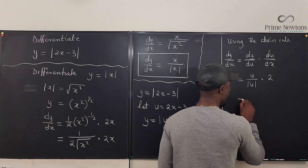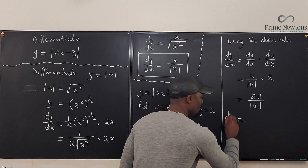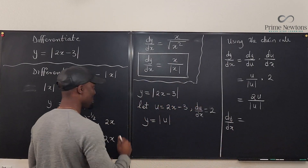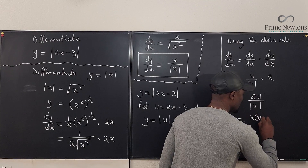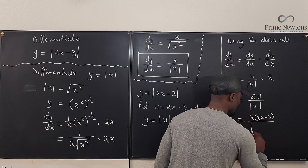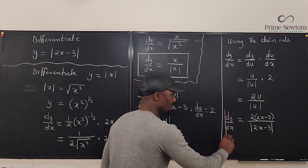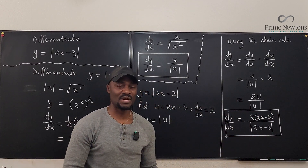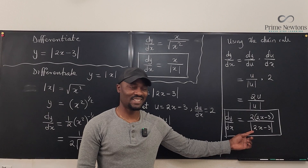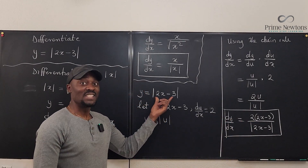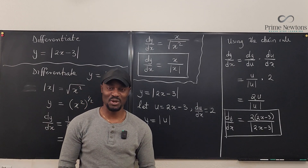Since u equals 2x minus 3, dy/dx is going to be 2 times (2x minus 3) divided by the absolute value of (2x minus 3). This is the derivative of the absolute value of 2x minus 3. As you can see, the pattern is: the derivative of the inside times the inside, divided by the absolute value of the inside. Never stop learning — those who stop learning have stopped living.